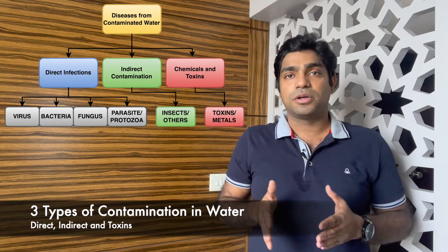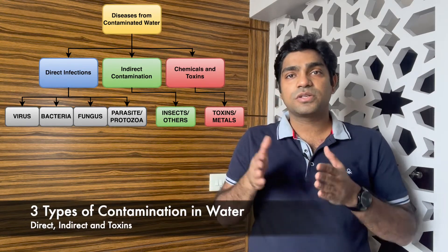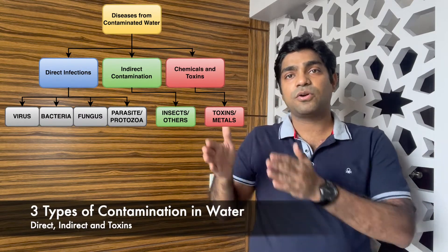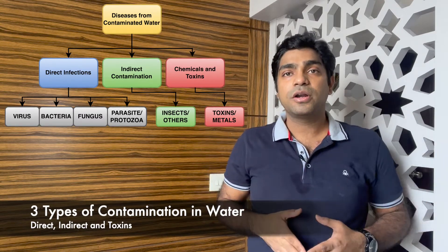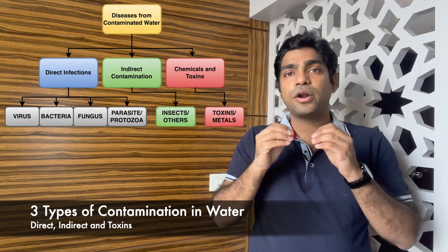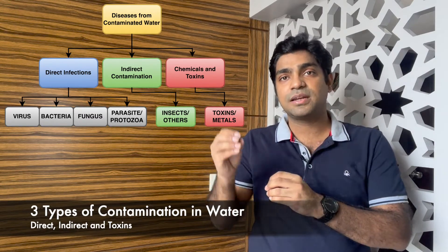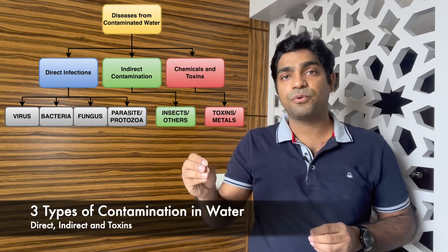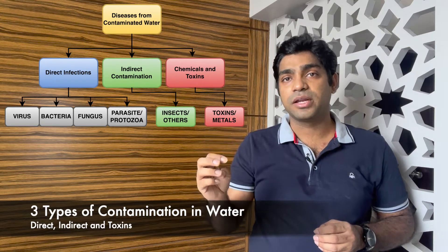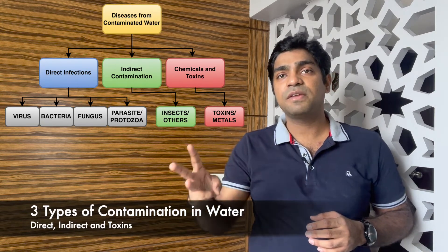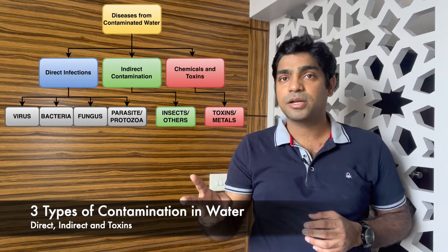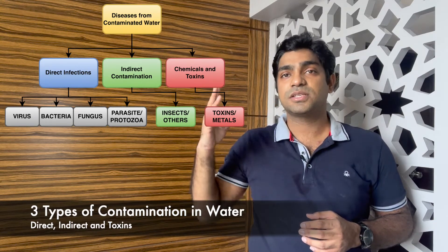Then there can be toxins present in the water. These toxins can come through fungi and are called mycotoxins. There can also be various chemicals or substances present, like heavy metal poisoning — lead, arsenic, and mercury. These are the three heavy metals which can be found in contaminated water and can cause severe disease.